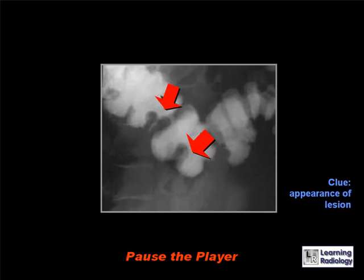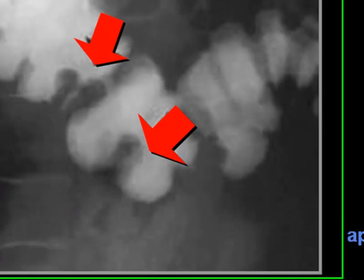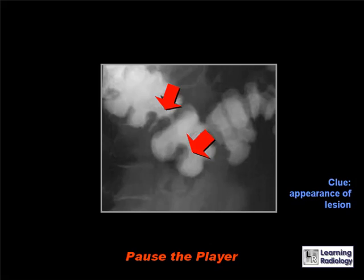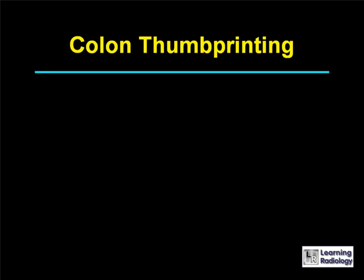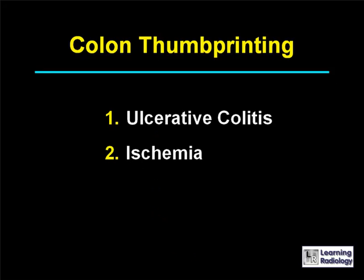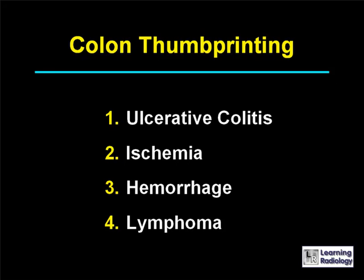The differential is for thumb printing in the colon. There are four causes: ulcerative colitis, ischemic disease, hemorrhage, and lymphoma.